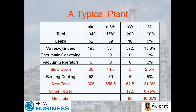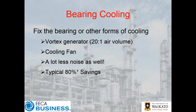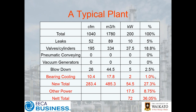Updating our typical plant: with blowers we've taken a 75% reduction on blowdown, dropping it to 2.5%. Our total numbers are really starting to drop, and even allowing for the extra ancillary equipment added, we're now down to 40% of our original power consumption. For bearing cooling, using a vortex generator or cooling fan gives typical power savings of around 80%, with a lot less noise. Updating our chart, we're now down to 27% of our original air use, and even allowing for the extra vacuum and blowers, we're still only at 36% of where we started — we've gone from 200 kilowatts down to 72.